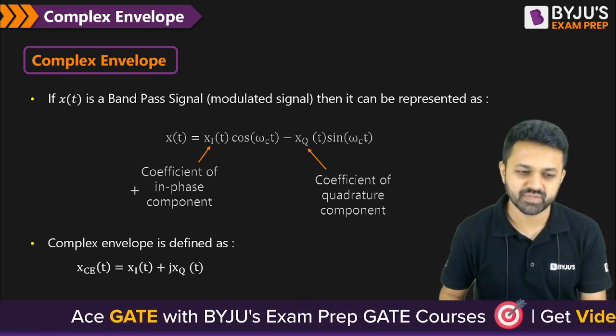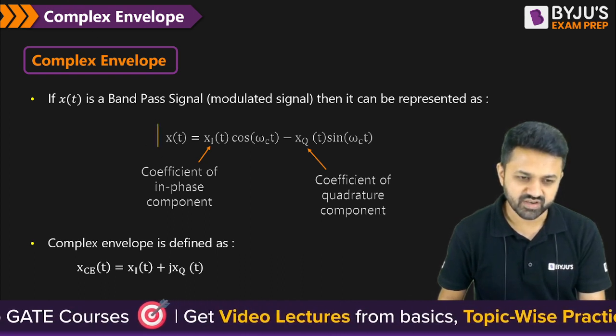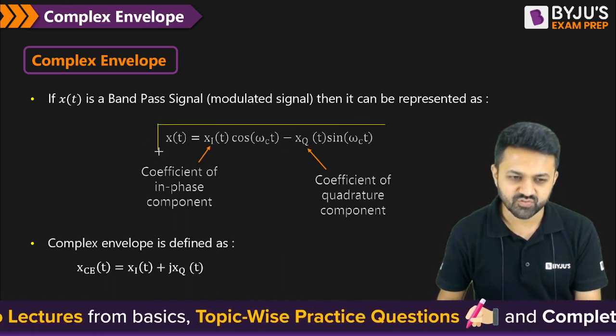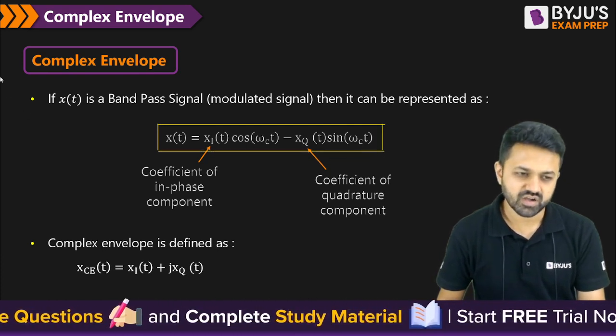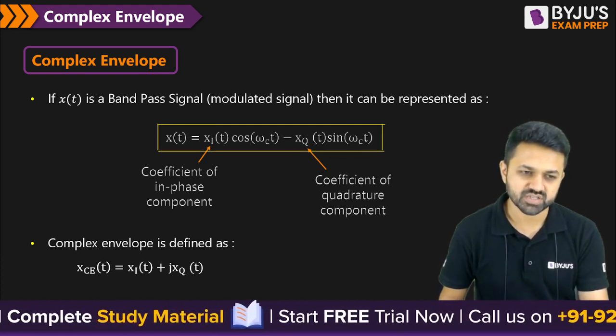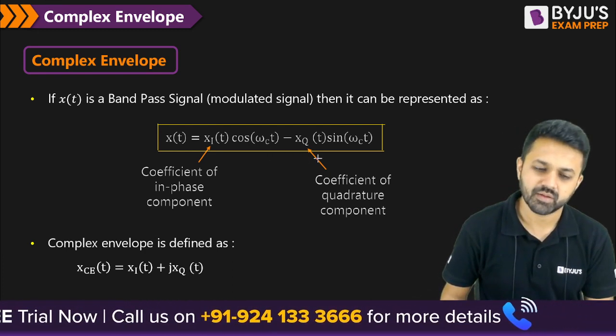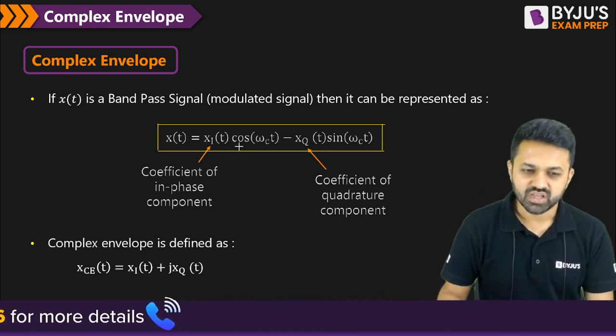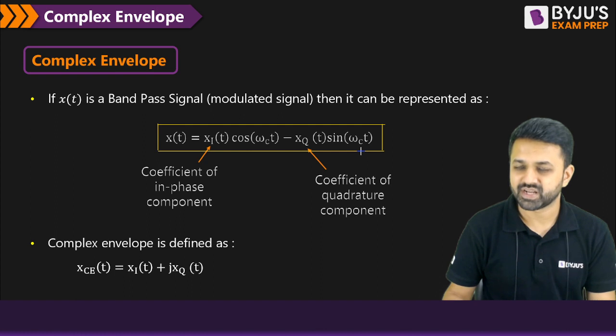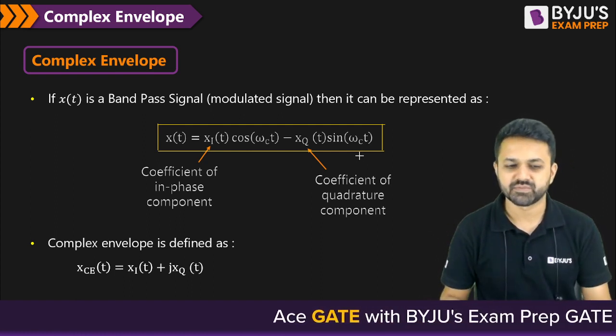So if you have a bandpass signal, then any bandpass signal can be represented by this particular expression. So when you have any bandpass signal given, then definitely you will be able to convert this into this form. Convert that equation into this form because it is a bandpass signal. So you will definitely be able to write. And you have to do some mathematical manipulation. Then one will be the cos ωc·t and sin ωc·t means the quadrature component should be there. And the frequency must be same.